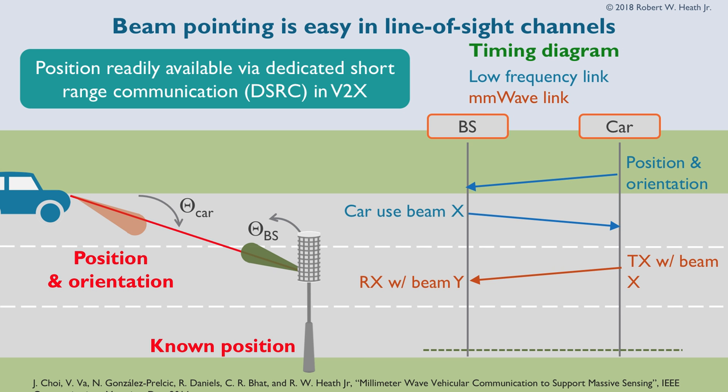One easy source of information in the vehicle setting is location. Cars are starting to be equipped with dedicated short-range communication (DSRC). The key feature of DSRC is that cars broadcast a heartbeat message — their position and some other parameters — ten times a second. A base station could be listening and saying there are cars at various locations. I want to communicate with cars — let me try to point a beam there. You can imagine the system working where a car establishes communication with the base station, sends its location, and the base station says: this beam works. Then they start communicating.